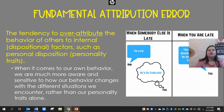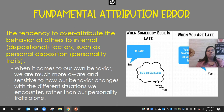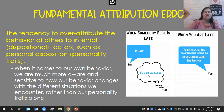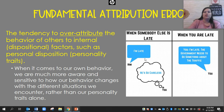The fundamental attribution error is our tendency to over-attribute the behavior of others to internal dispositional factors, such as personal disposition and personality traits. When it comes to our own behavior, we're really aware of and sensitive to internal and external factors. But when it's other people, we tend to blame their internal factors and not consider the environment or the external situation. So when somebody else is late, you think, 'He's so careless, he just doesn't ever care about being on time,' but you don't consider that maybe there was a terrible wreck and they got caught in traffic.